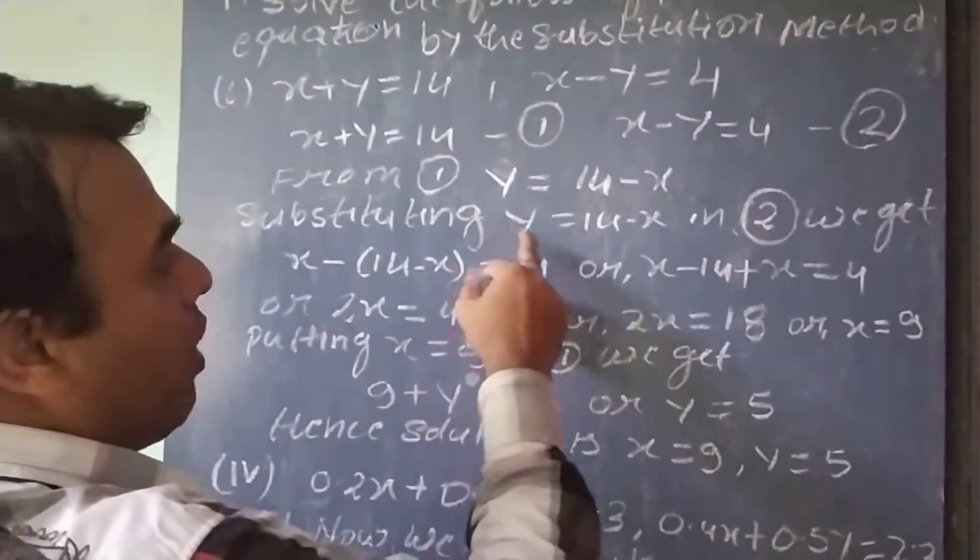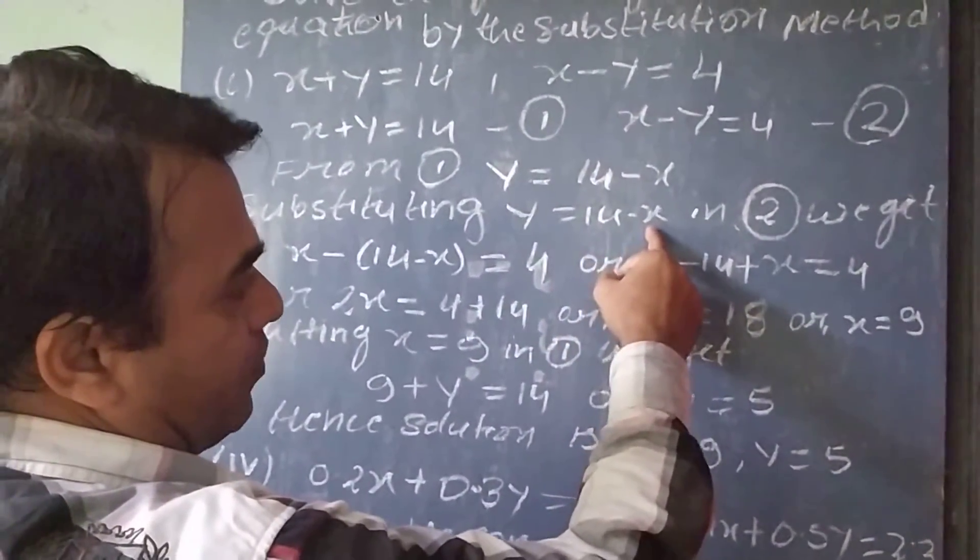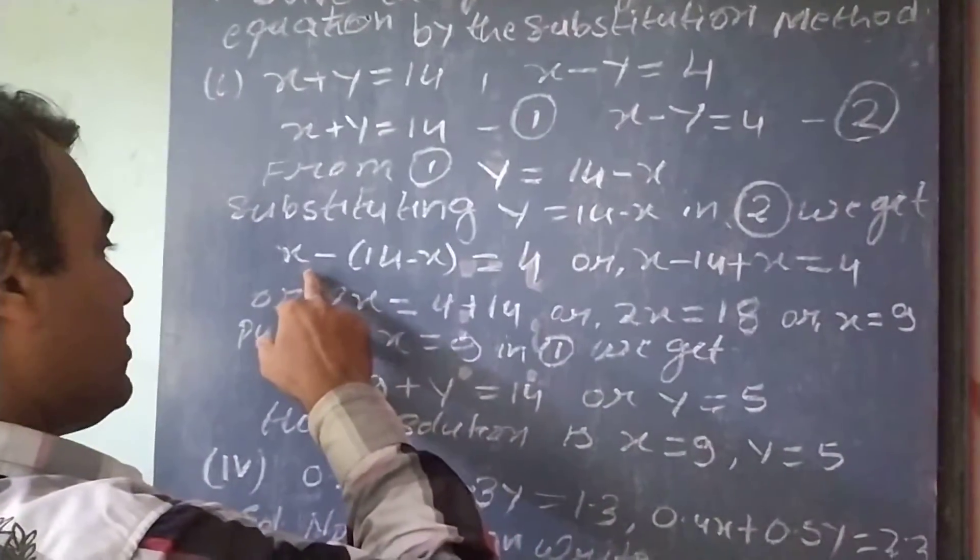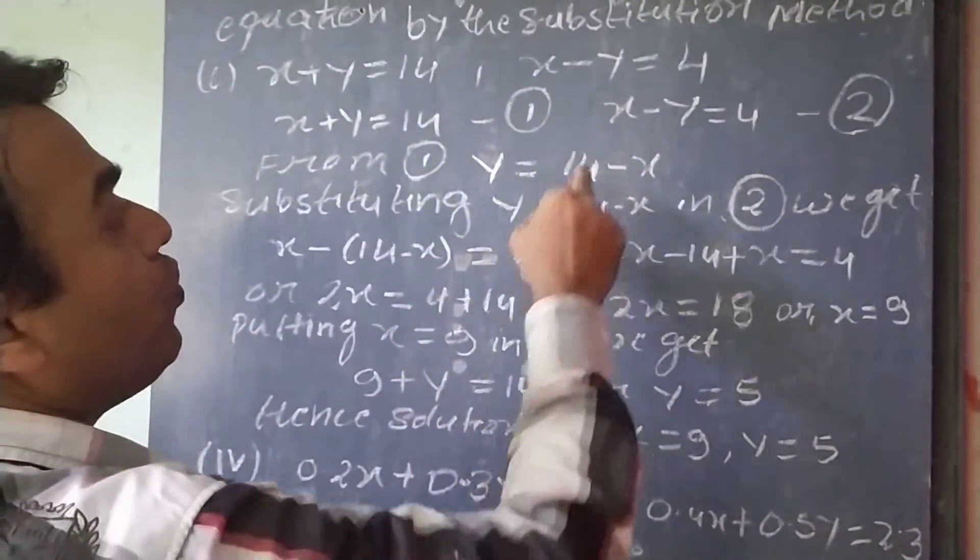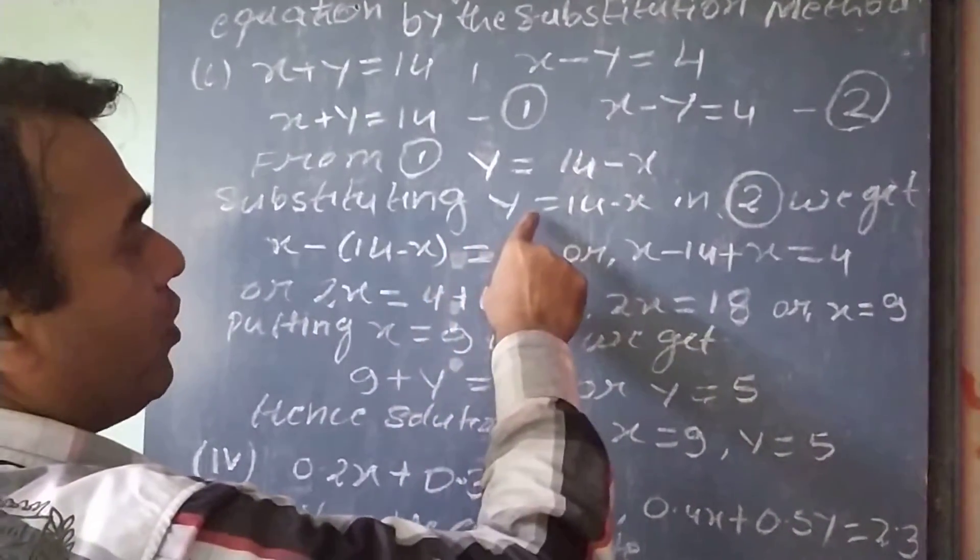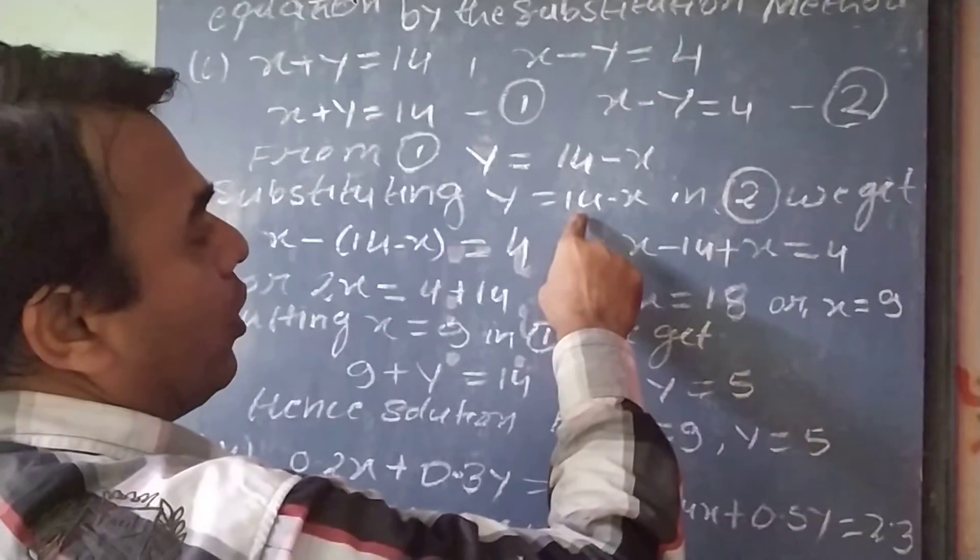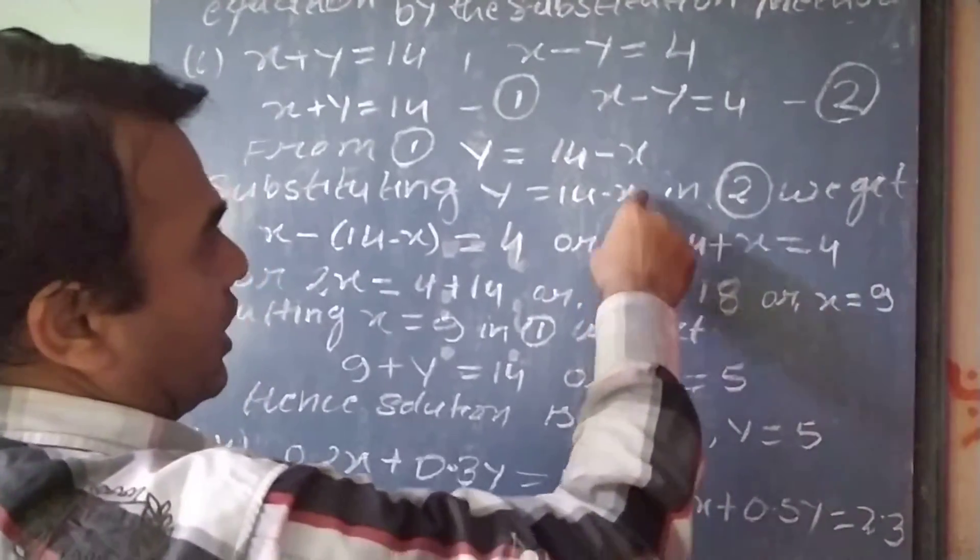Now, substituting y equal to 14 minus x into equation 2, we get x minus (14 minus x) equal to 4. We have put the value of y equal to 14 minus x in equation 2.